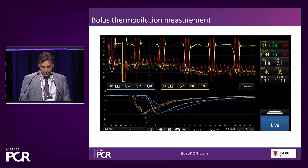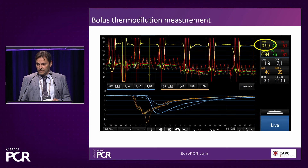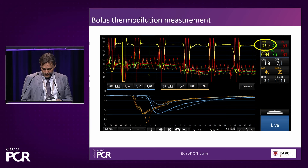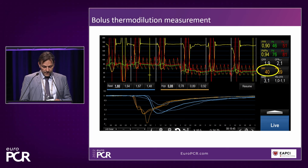We continued with bolus thermodilution measurements. Always interrogate the epicardial vessels in these cases, because many patients referred for coronary function testing turn out to have a simple epicardial stenosis with a positive FFR. Not in this case — the stents were well open angiographically and hemodynamically, with FFR of 0.90. But CFR was low at 1.9 and IMR was elevated at 40. In conclusion, this patient had a vasospastic reaction to acetylcholine but also an abnormal reaction to adenosine with decreased CFR and increased IMR — the diagnosis being combined epicardial spasm with microvascular dysfunction.